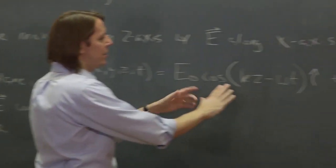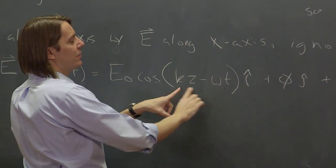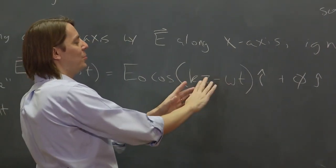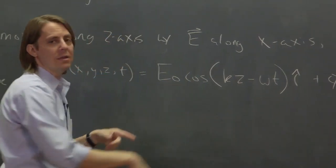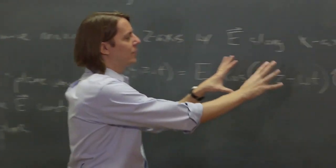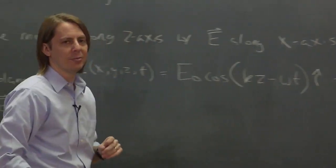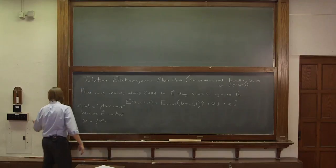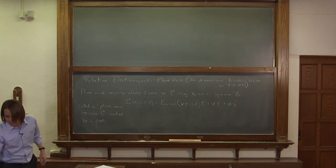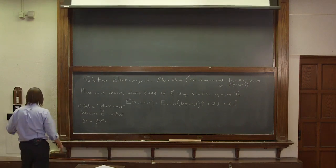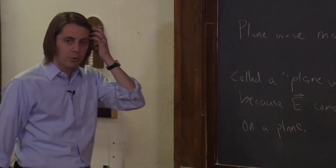It's the place where the e-field is constant would be where this phase is constant. Because if you have some space and time situation where this is all the same, then all over that plane it's just going to be e times i. Or if this whole thing is always 0.5, it'd be half of e times i. So let me show you an illustration of what that will look like so we can really get the picture of a plane wave into our heads.